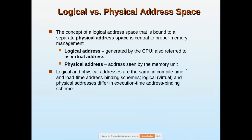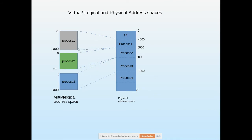Logical address is how the user sees the program — it is generated by the CPU. Physical address is the address seen by the memory unit. For example, process 1 has a virtual/logical address starting at line 0. When loaded into main memory, line 0 maps to physical address 4000, line 1 maps to 4001, line 2 to 4002, and so on. Similarly, process 2 loaded elsewhere would have line 0 at 5000, line 1 at 5001, etc. This mapping is the physical address space — how the memory unit sees each process.